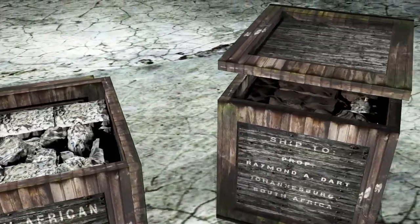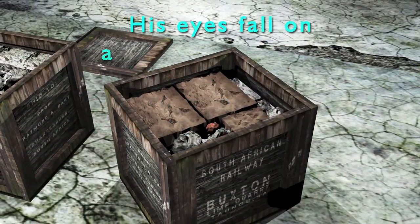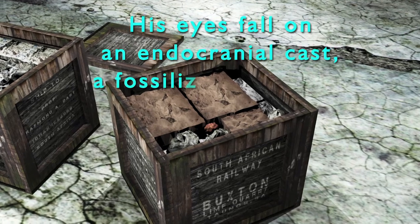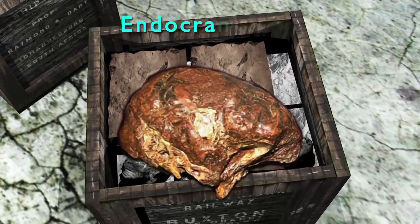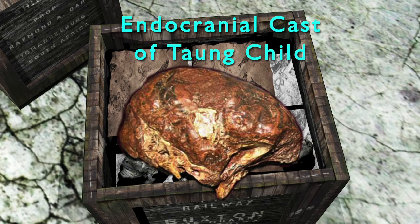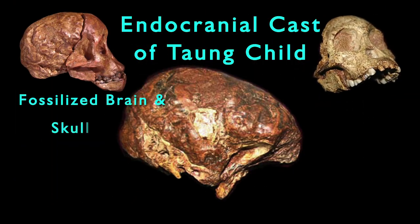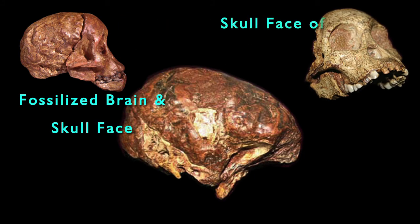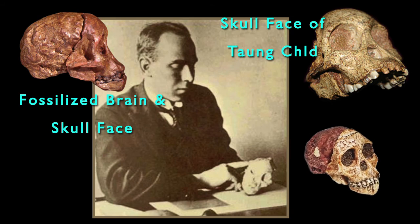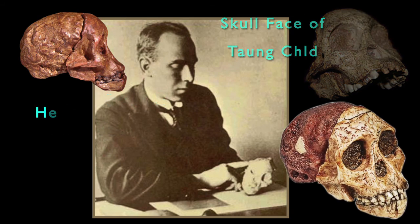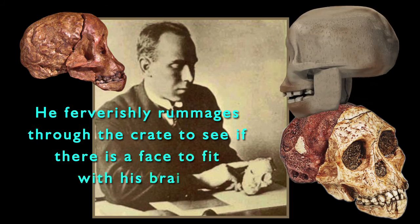He turns to the second crate and removes the lid. His eyes fall on an endocranial cast, a fossilized brain from the interior of a skull that he sees lying atop the contents. As he picks up the fossilized brain, Raymond can see right away that the brain is too large for a baboon or chimpanzee, yet too small to be that of a primitive man. He senses he is holding in his hands something new, something very different. He feverishly rummages through the crate to see if there is a face to fit with his brain.